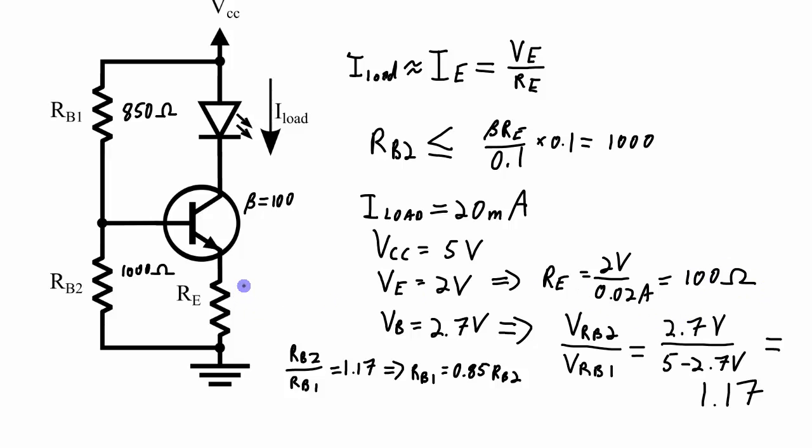And in this particular case, that's going to be equal to 1,000. So I'm going to choose my RB2 of 1,000. So if my RB2 is 1,000 ohms, then according to this equation, my RB1 needs to be 850 ohms. I've also figured out what my RE is, it's 100 ohms. So if I build this circuit, I am going to get approximately 20 milliamps through this LED.